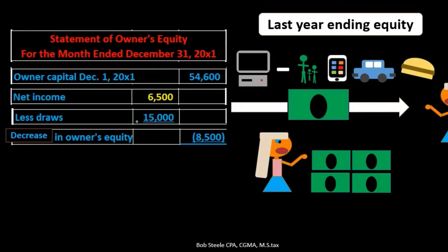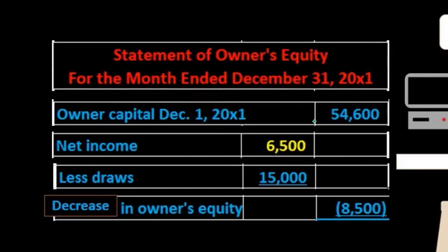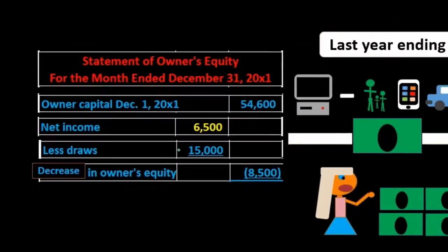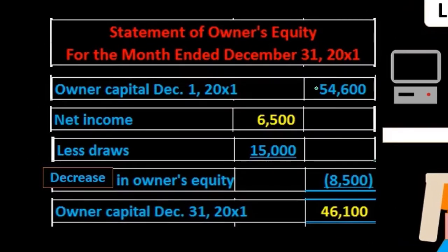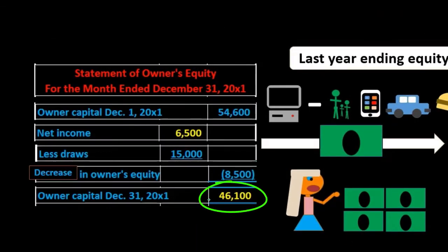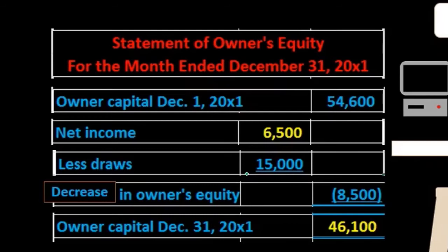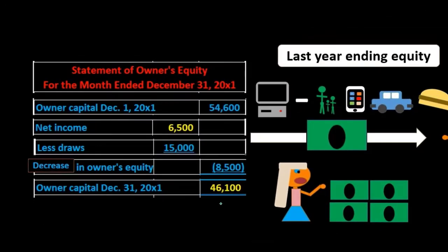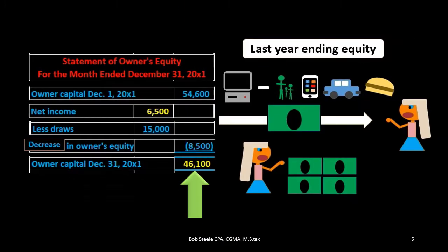We might think that would be a very big problem, and if it were the first year of operations it could be. But note that there was prior equity of $54,600. Even though $15,000 was drawn out and only $6,500 was earned, there's still significant value in the company. The $54,600 beginning balance minus the net of $8,500 leaves an ending balance of $46,100, which is then reported on the balance sheet.